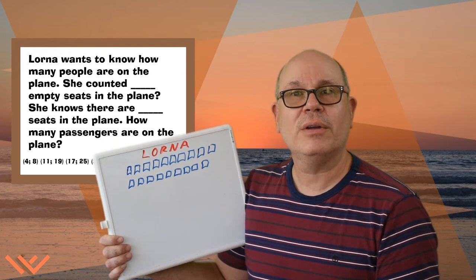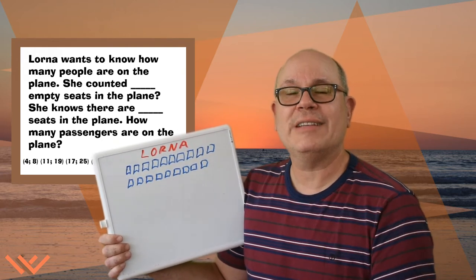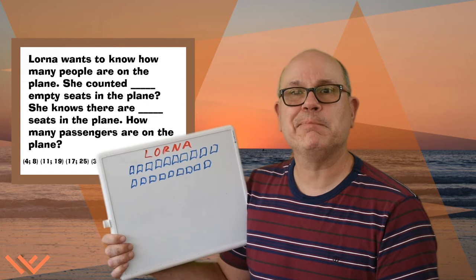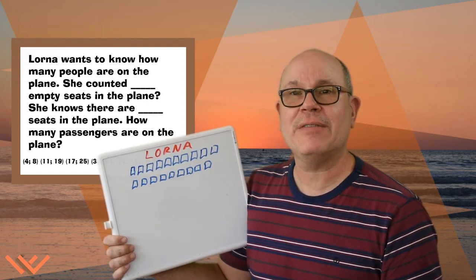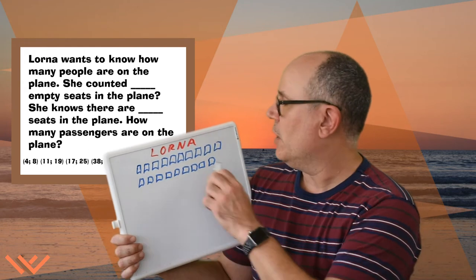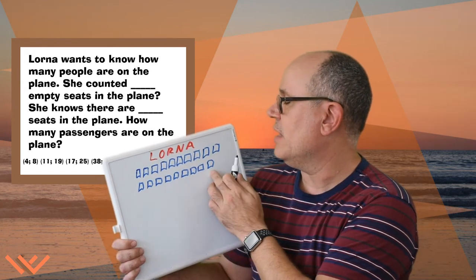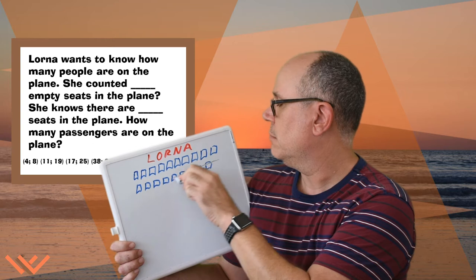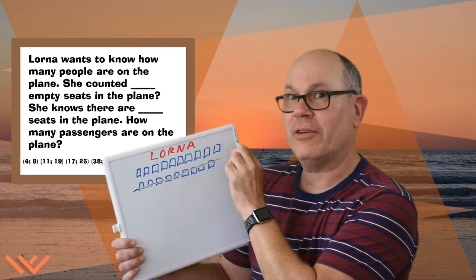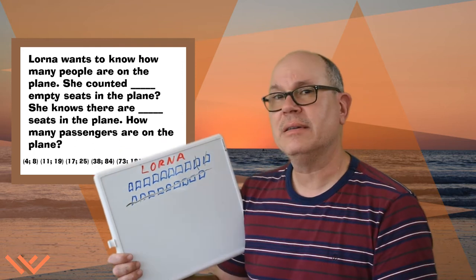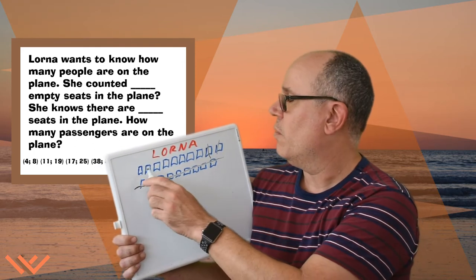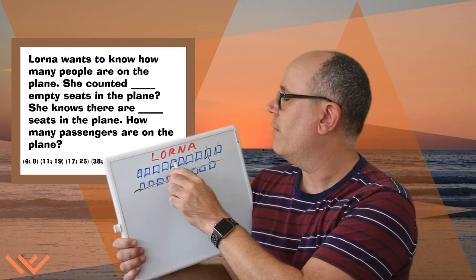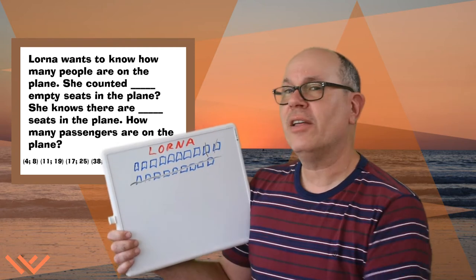So now, all we need to do is — she has 11 empty seats. How many passengers are on the plane? Let's cross off those 11 empty seats first. So I know this is 9, and we count on from 9: 10, 11. Count with me to count the number of remaining seats: 1, 2, 3, 4, 5, 6, 7, 8. There are 8.